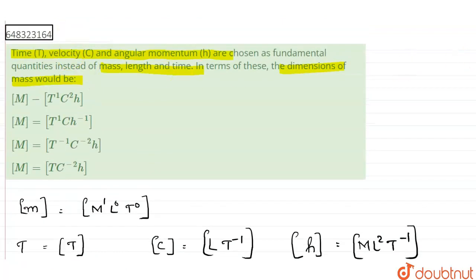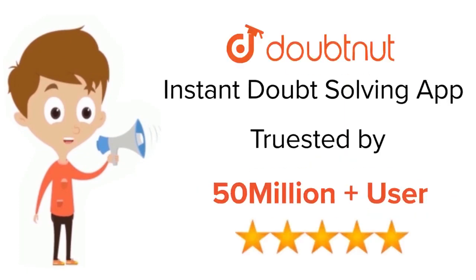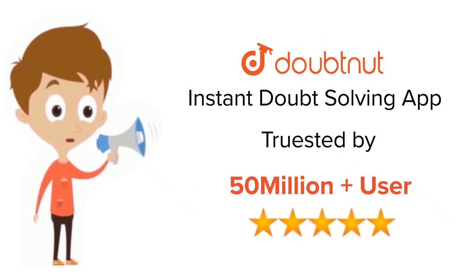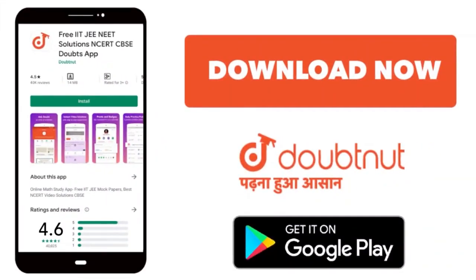So our correct answer is the third option. Thank you. For class 6 to 12, IIT JEE and NEET level, trusted by more than 5 crore students — download the Doubtnut app today.